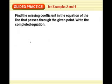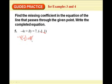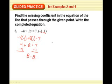Find the missing coefficient of the equation of the line that passes through the given point. Write the completed equation. They give us an X and a Y, so let's substitute them in: negative 4 times negative 1 plus B times 1 equals 7. That simplifies to 4 plus B equals 7; subtract 4 to get B equals 3. So the completed equation is negative 4X plus 3Y equals 7.